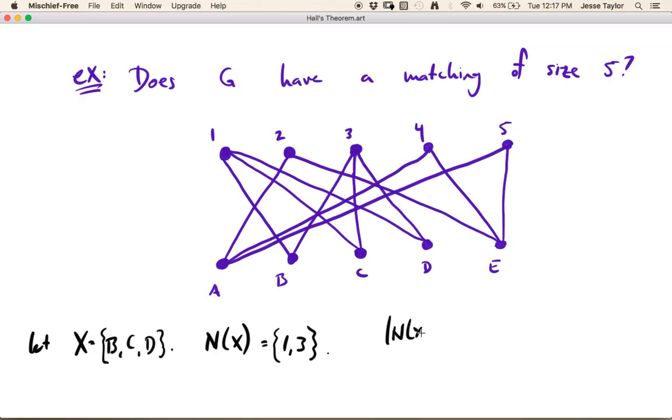well now the size of the neighborhood of X is not greater than or equal to the size of X, right? Hall's condition says it's supposed to be. But here, right, we have 2, right? And that's certainly not greater than 3. So this violates Hall's condition.